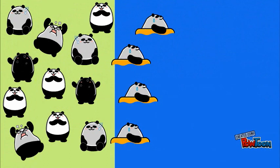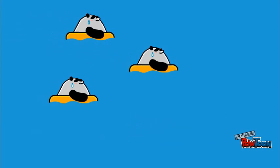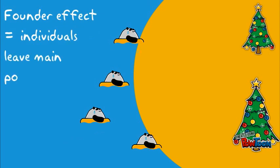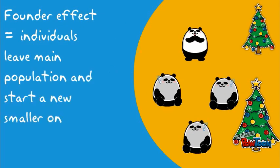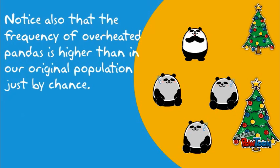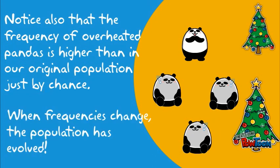The founder effect works similarly as a cause of genetic drift. Let's suppose a group of our pandas set off in search of a better life. After traveling for a while by sea, they eventually make it to their promised land. As they pull themselves on shore, we notice that not all varieties made it. With just a small group of pandas traveling, just by chance, we left the dark ones behind and we left the grumpy ones behind. Our allele frequencies are much different than they were in our main starting population.